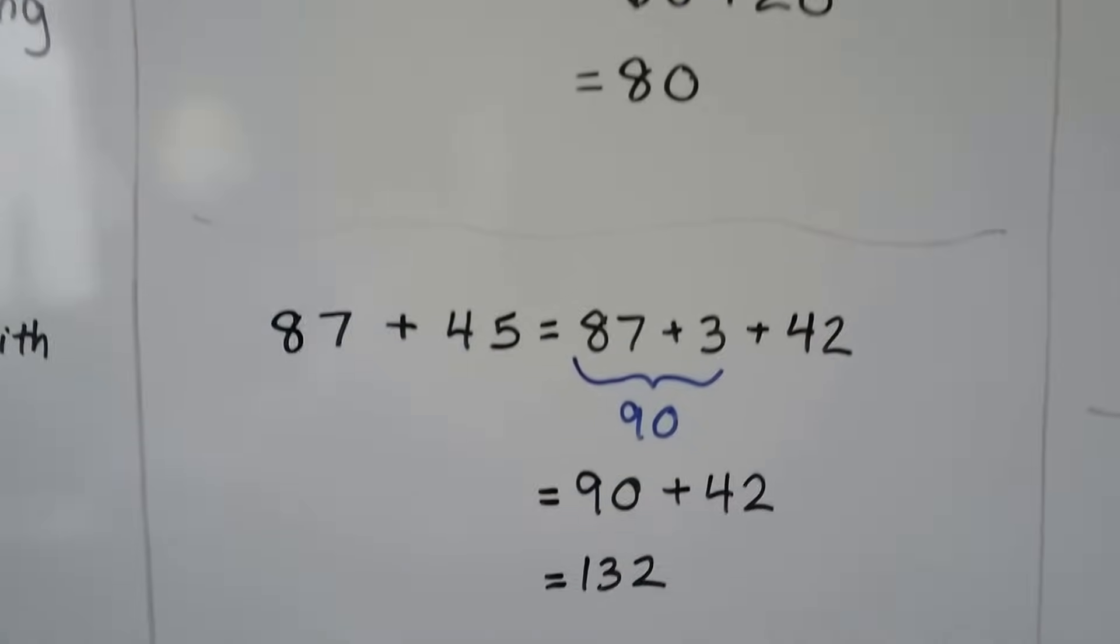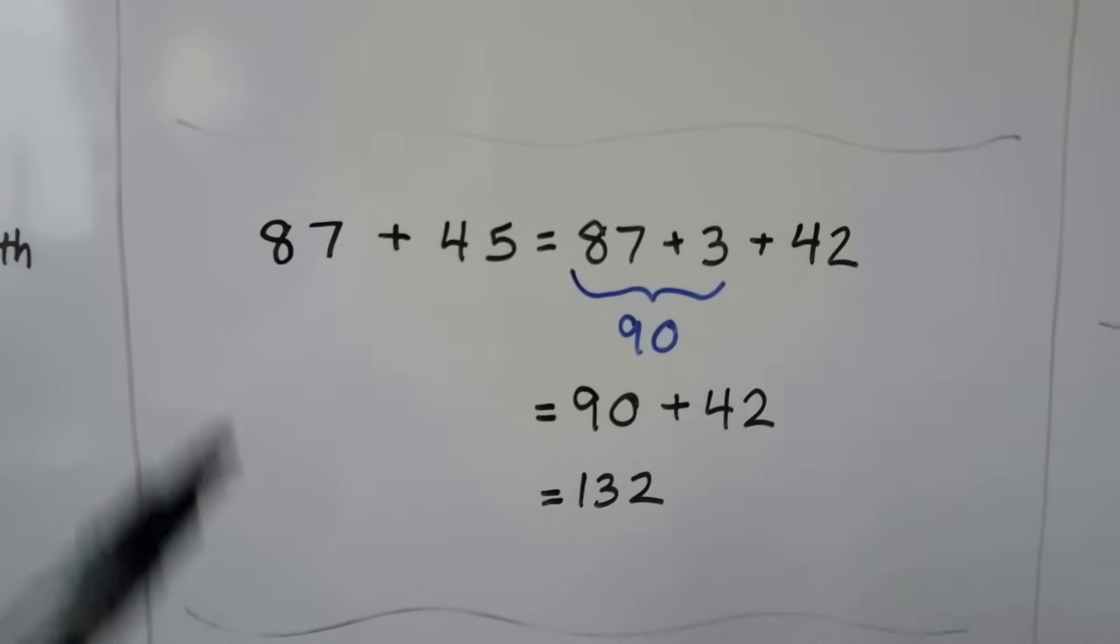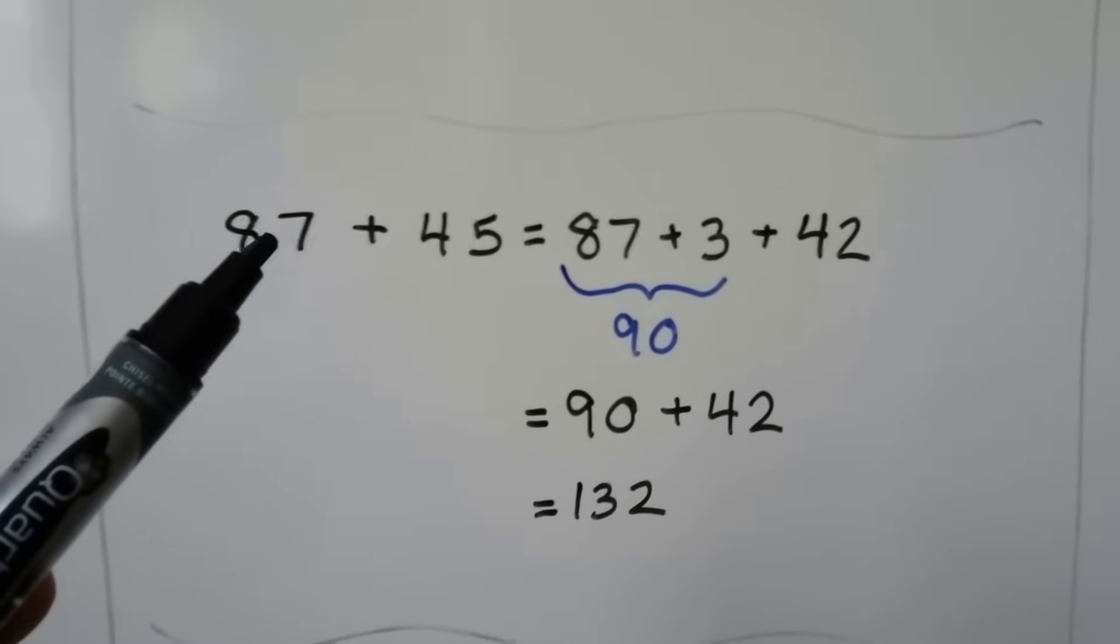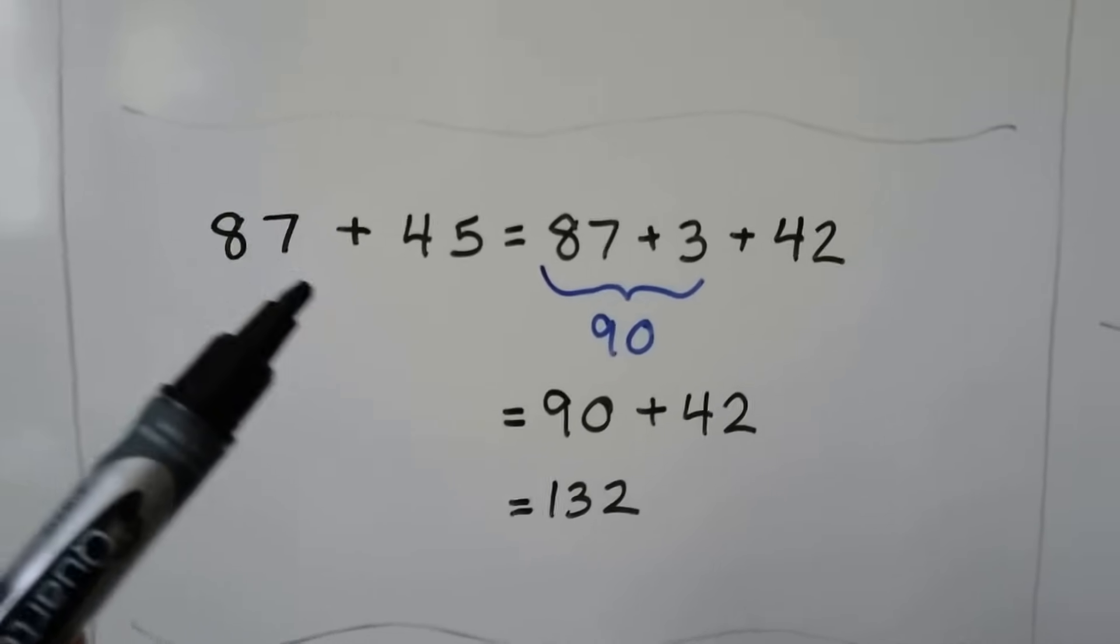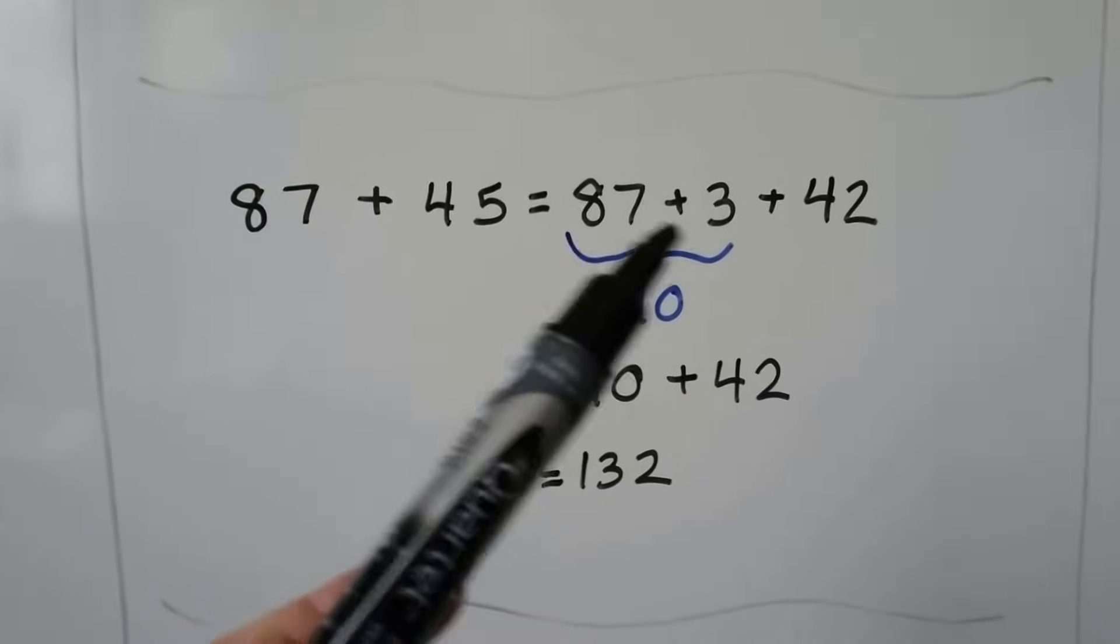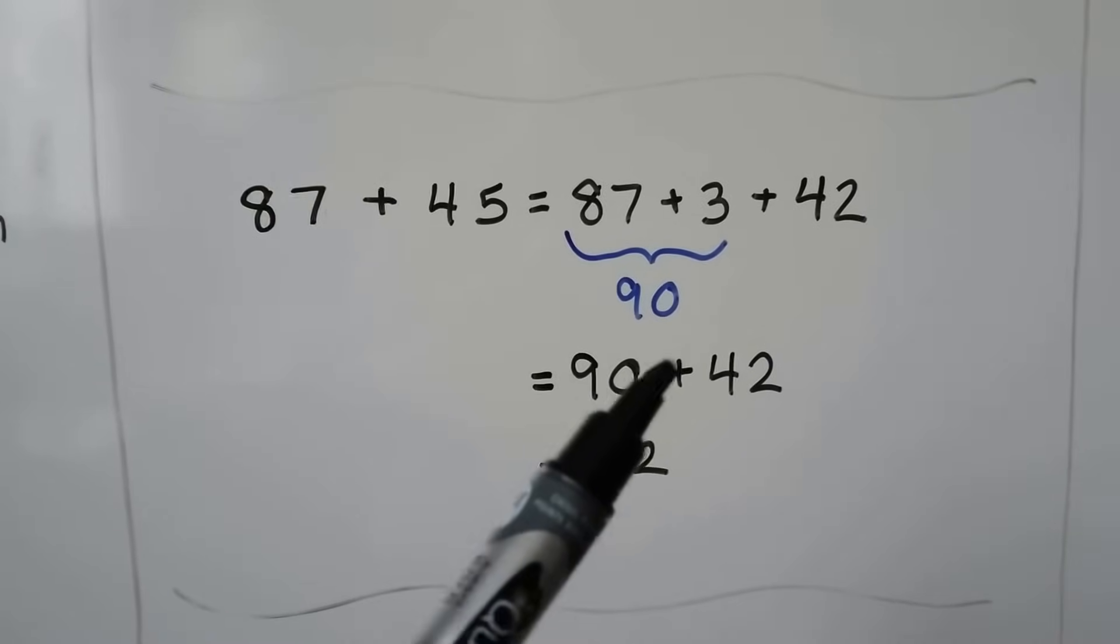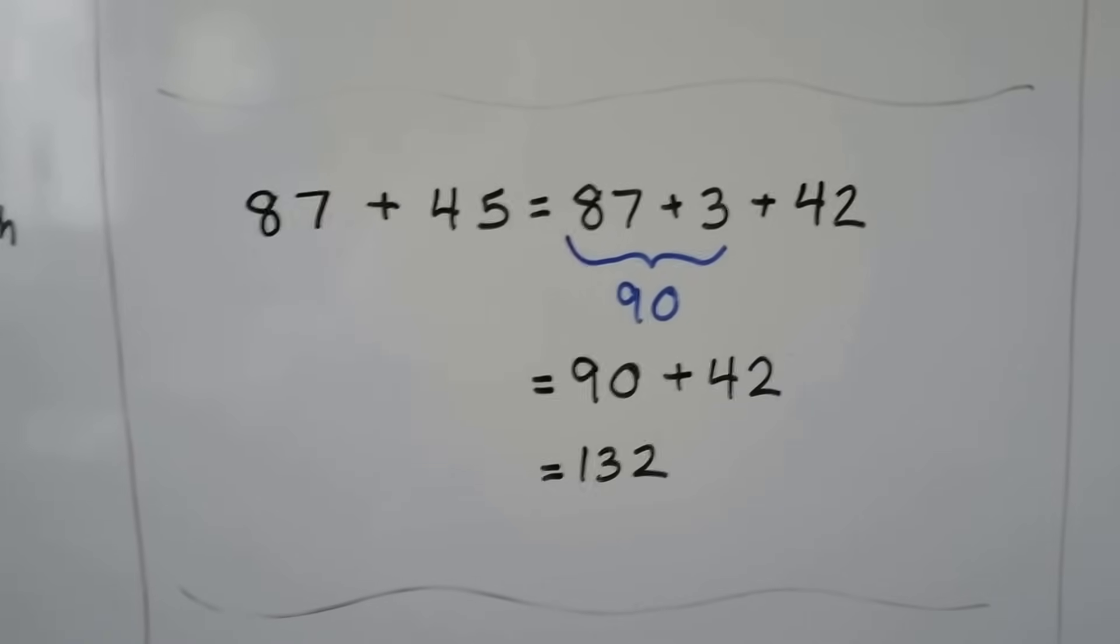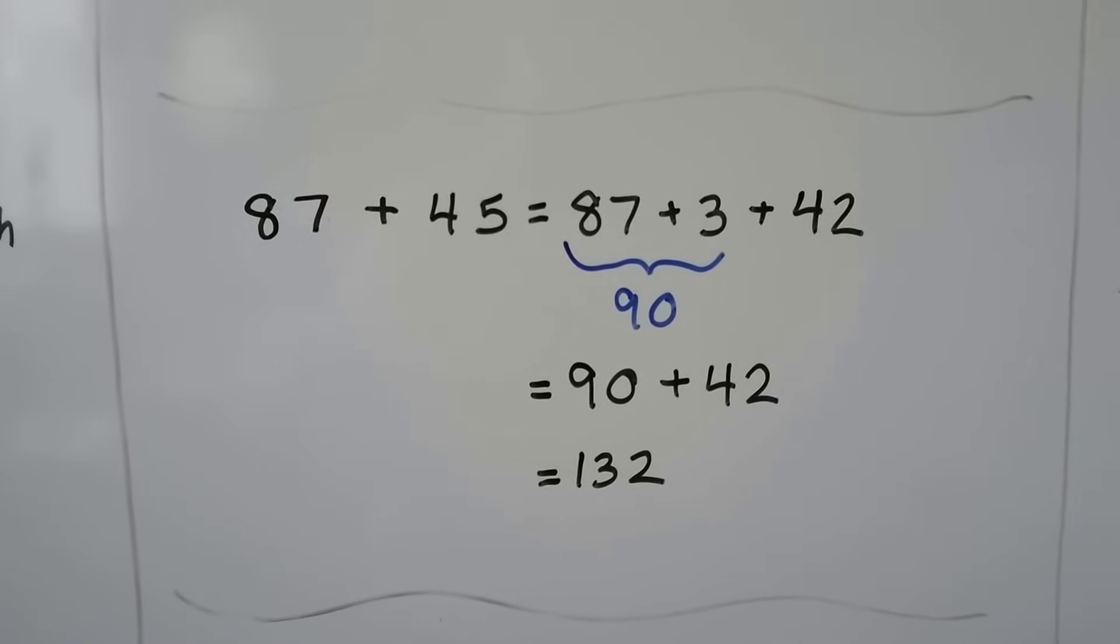Let's try another one. 87 plus 45. We can make this 90 if we just had 3 more. So we could take the 3 from the 45 and make it 42, give it to the 87, and now we have 90 plus 42. We can add that in our head as 132.